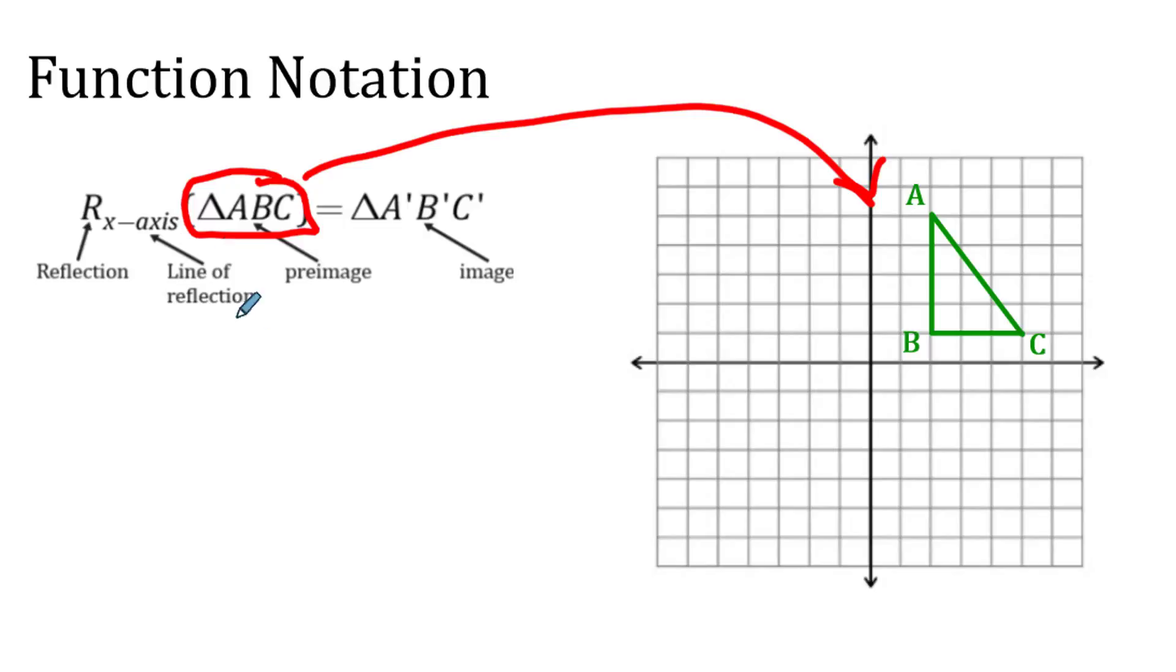Then we're going to flip it over the x-axis. So the x-axis is this line right here. I'm going to flip that over. 1, 2, 3, 4, 5. 1, 2, 3, 4, 5. So I made my reflected image.